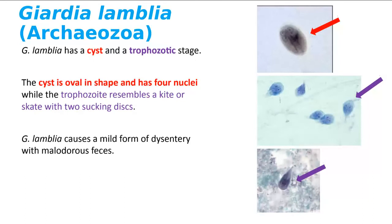The second organism in this group is Giardia lamblia, an enteric parasite. If you see all this debris in the background, that means it's a fecal smear, and you can say it's dysentery. If you're ever lost and not sure what it causes, most of the protozoal parasites are going to cause a form of dysentery.